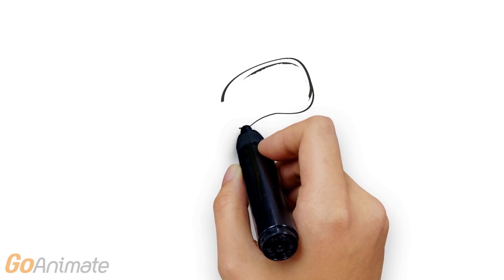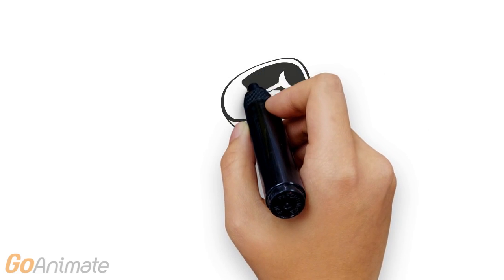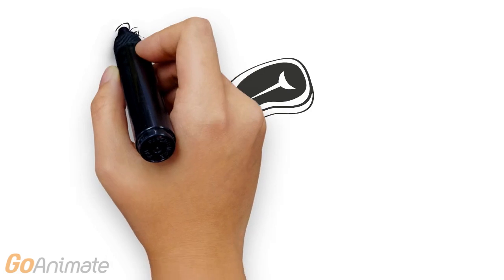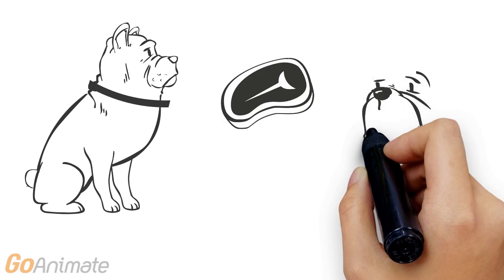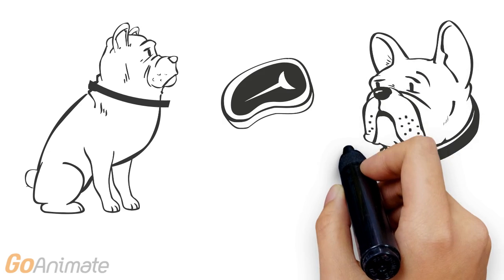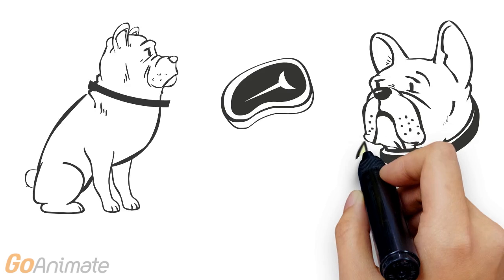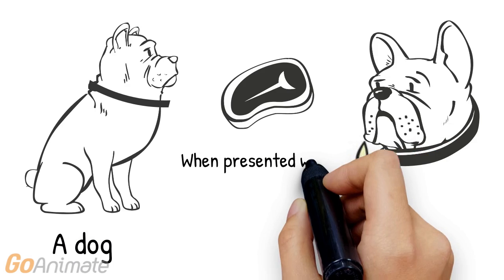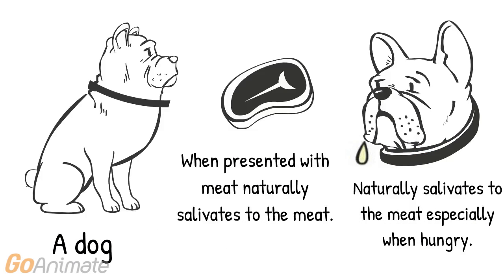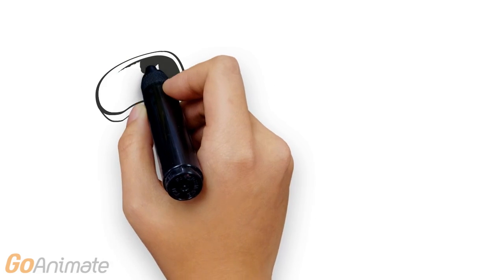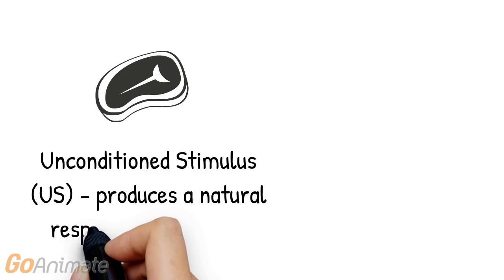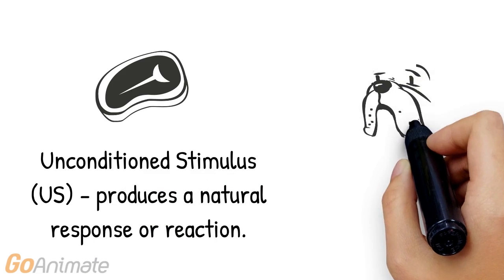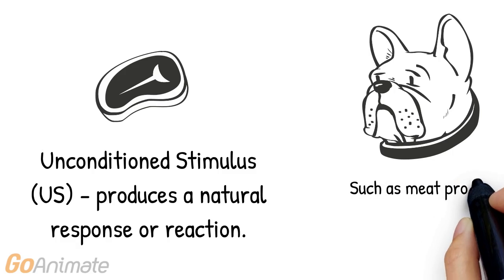The first thing that Pavlov did was present a piece of meat to dogs, and of course, like most hungry dogs, they would salivate — or drool — when they saw the piece of meat. The unconditioned stimulus in this case is the meat, because it produces a natural reaction from the dog: salivating.